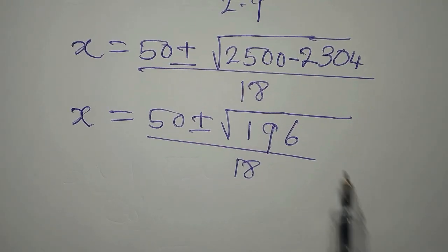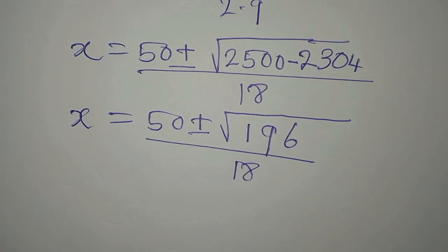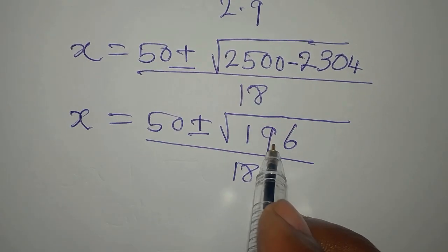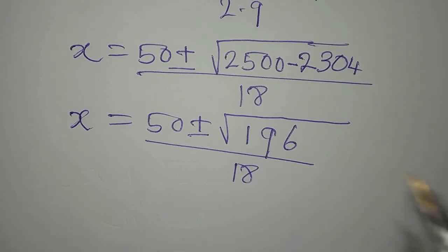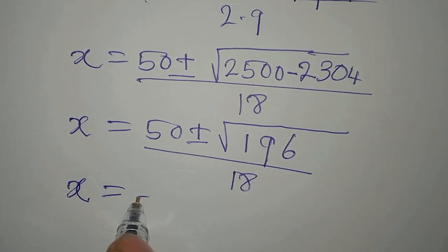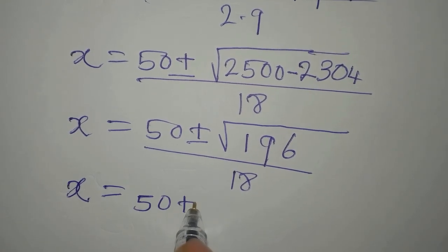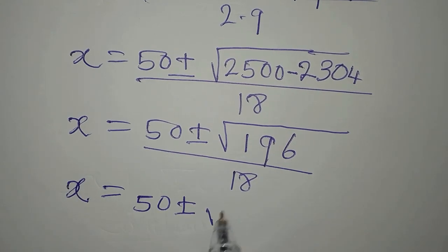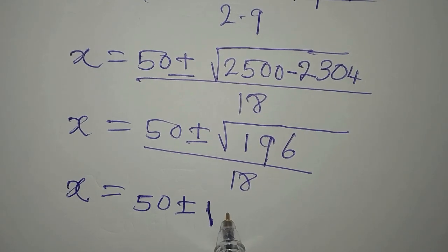And if you must know, 196 is a perfect square because we can find its square root and it will not give us a decimal number. So x will be 50 plus or minus square root of 196, which is 14.